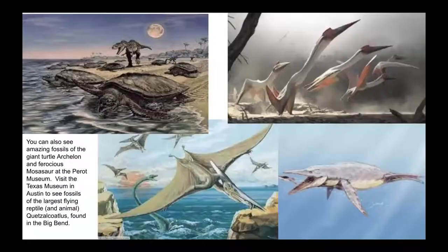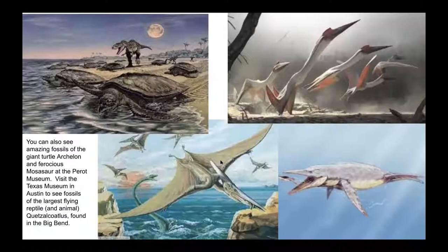Another place to look at fossils is the Perot Museum in downtown Dallas, where you can see Archelon, the gigantic turtle — that fossil was found in Plano, north of town — and also Mosasaur, the giant ferocious ocean reptile. And if you go to Austin at the Texas Museum, you can see the fossil of the largest animal that ever flew on planet Earth — Quetzalcoatlus. They used to think it had to jump off cliffs to fly, but now they've decided it used its front limbs and back legs together to push off into the air. These things were enormous.